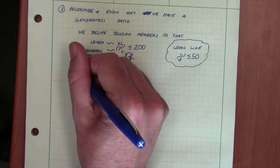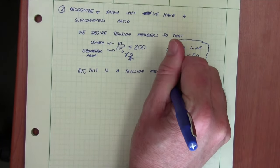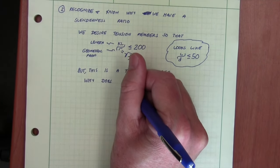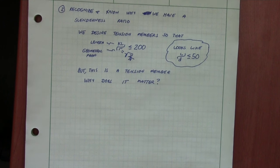But this is really a tension member and so what does this ratio do for us? And so I would challenge you to turn off your computer for a second and think about why we might have this ratio.